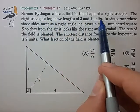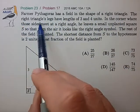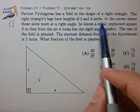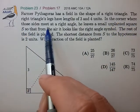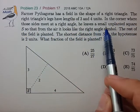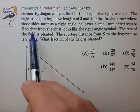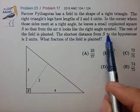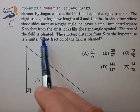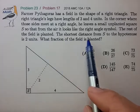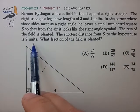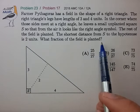Farmer Pythagoras has a field in the shape of a right triangle. The right triangle's legs have lengths 3 and 4. In the corner where these sides meet at a right angle, he leaves a small unplanted square S so that from the air it looks like the right angle symbol. The rest of the field is planted. The shortest distance from S to the hypotenuse is 2 units. What fraction of the field is planted?